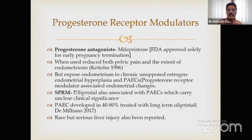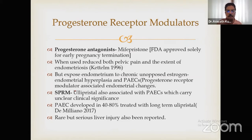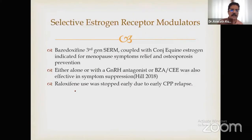Progesterone receptor modulators include mifepristone — a progesterone antagonist now also used for fibroids and endometriosis. Studies show improvement in both pelvic pain and extent of endometriosis, but chronic unopposed estrogen exposure can cause endometrial hyperplasia. Ulipristal acetate, a selective progesterone receptor modulator, showed 40 to 80 percent improvement with long-term use, but it was withdrawn from the market due to liver injury and is only slowly coming back.